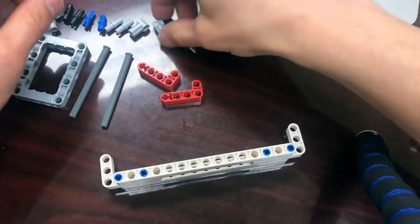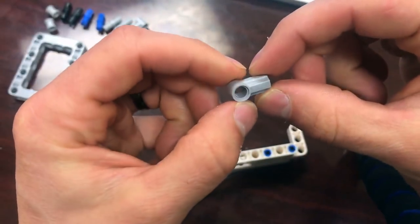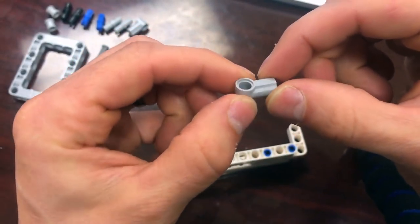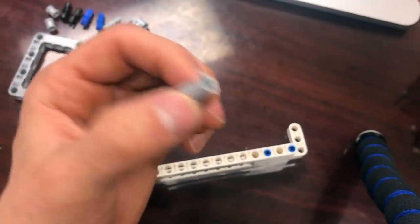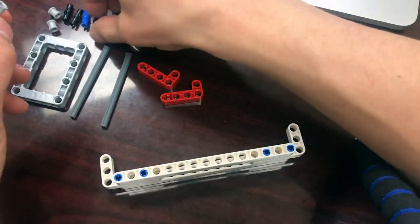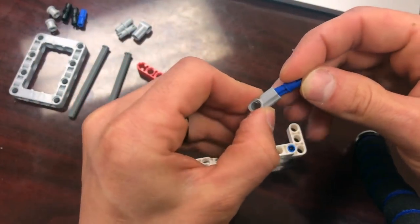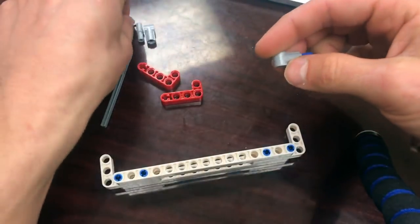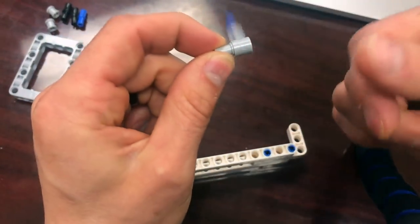I'm going to take these axle and peg combination pieces. I never know the technical name for Lego pieces. I'm sorry. And I'm going to put a blue half axle half peg in the bottom and a gray peg in the other peg hole.